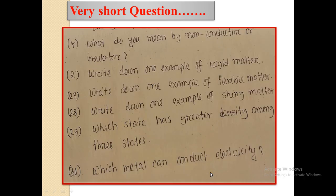What do you mean by non-conductor or insulator? Write down one example of rigid matter. Write down one example of flexible matter. Write down one example of shiny metal.